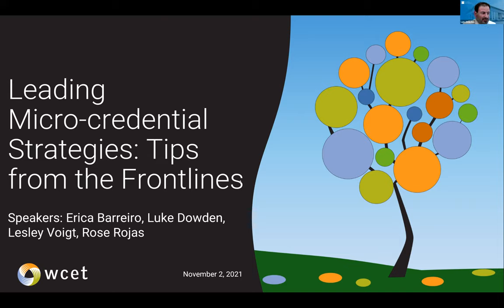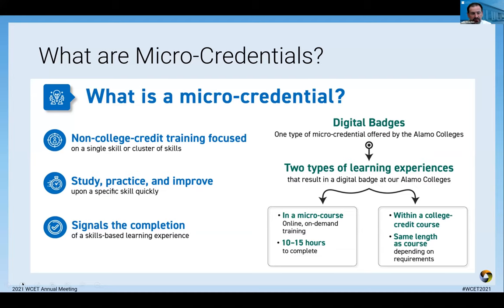I'm joined by leaders of four very large community colleges representing four states. We're going to share with you how we're exploring, designing, and creating alternate pathways into college for workers. I'm Luke Dowden, the Chief Online Learning Officer for the Alamo Colleges District in San Antonio, Texas. I serve five Hispanic-serving institutions all across Bexar County and beyond in South Texas. I'm going to go over a few housekeeping notes and invite our panelists to introduce themselves.